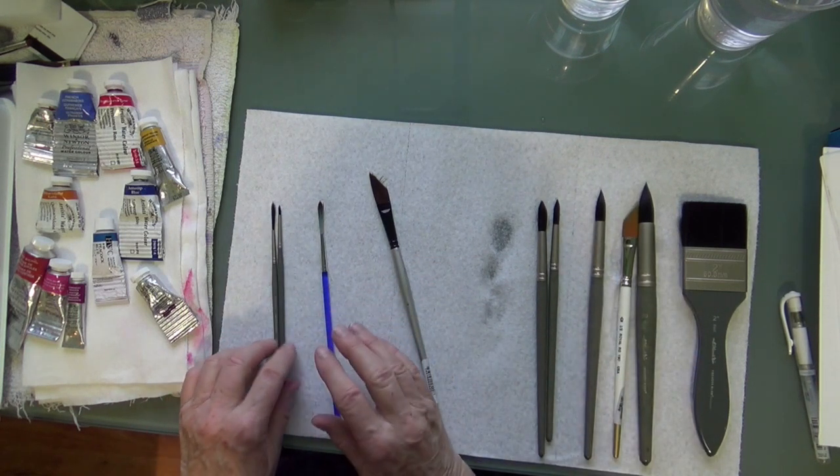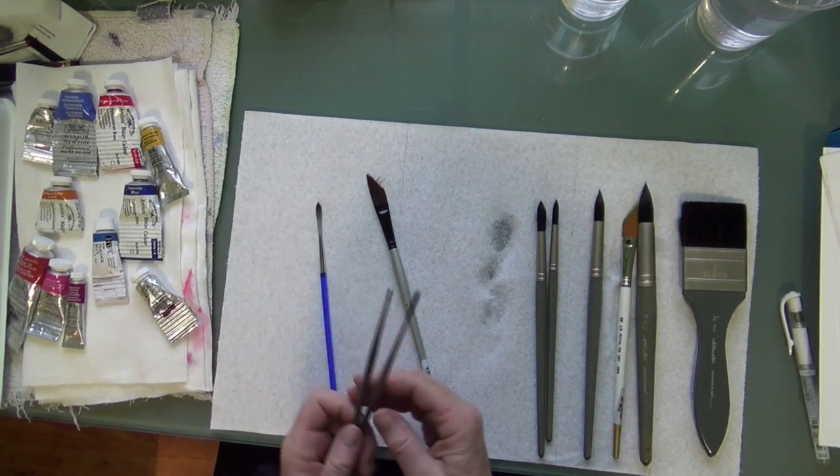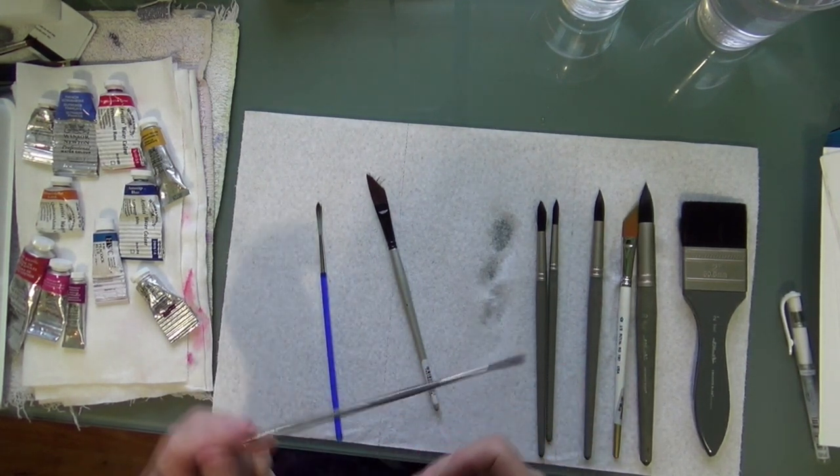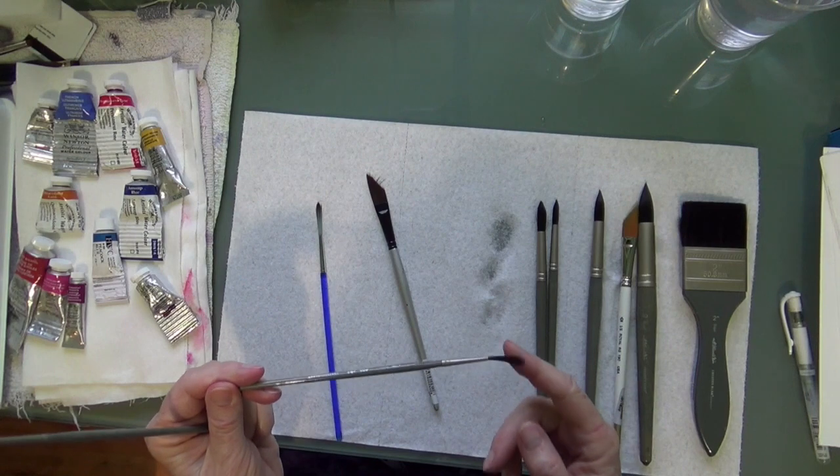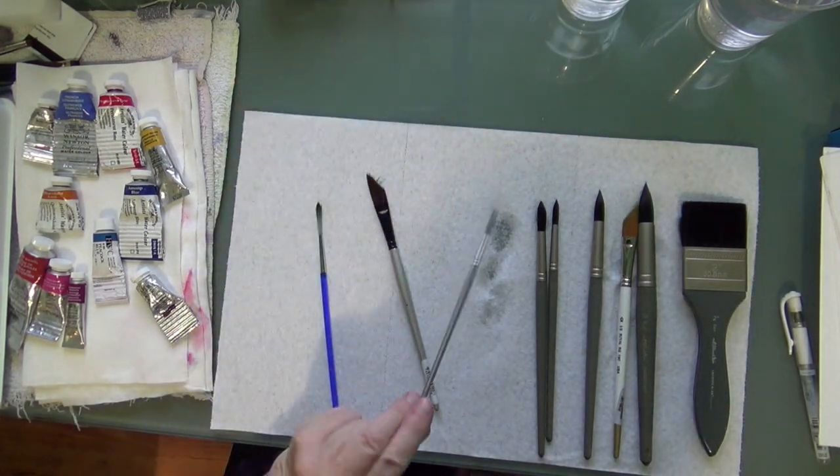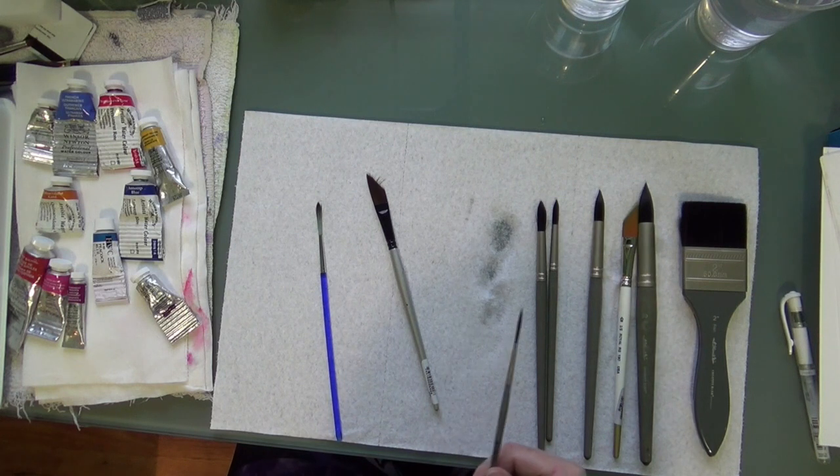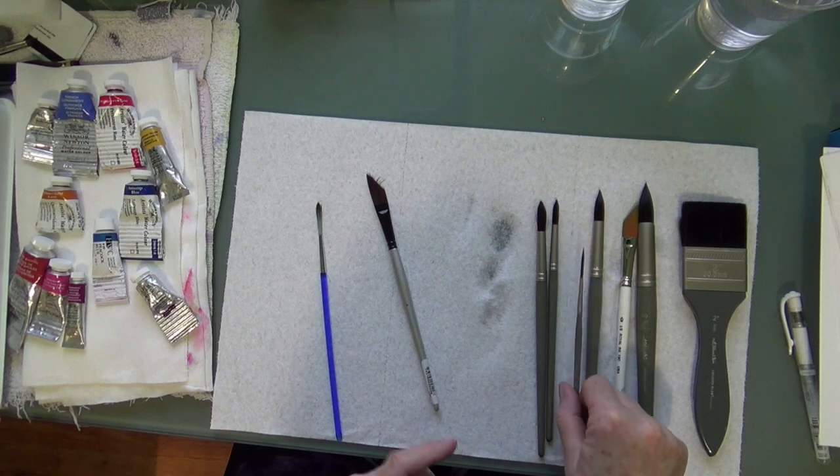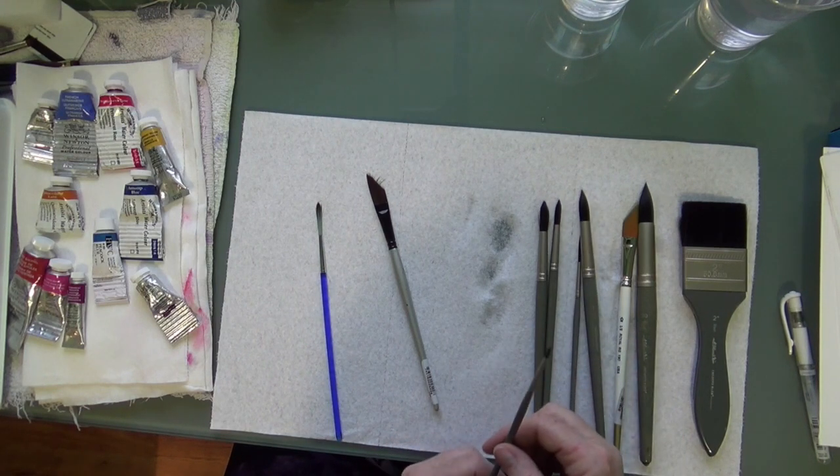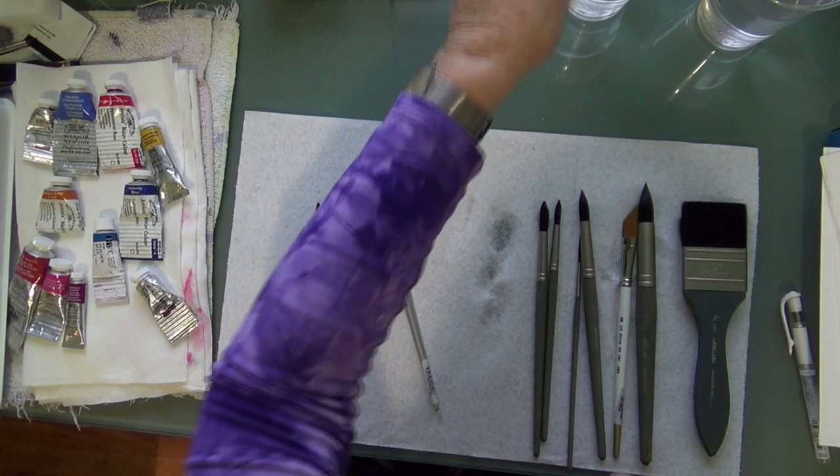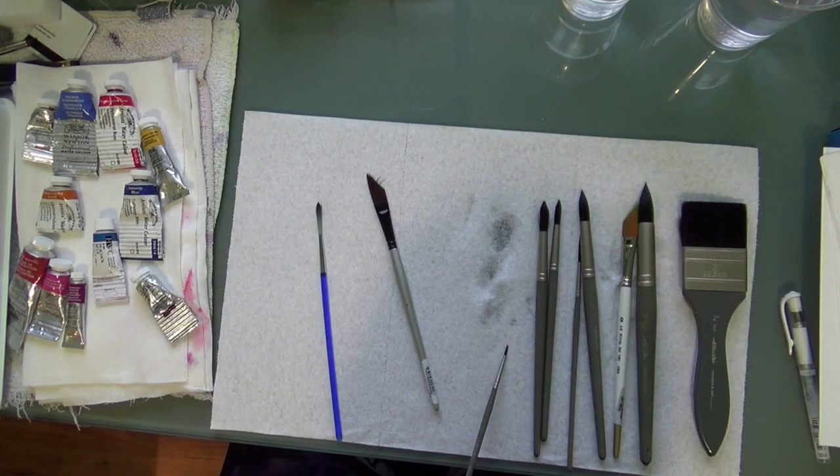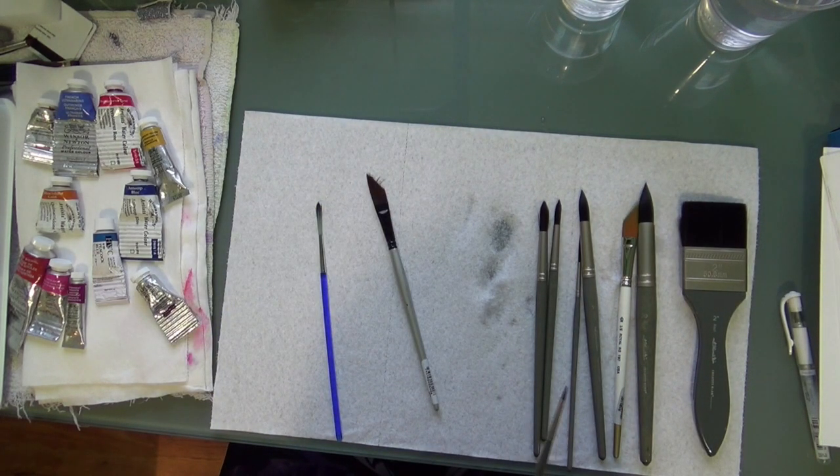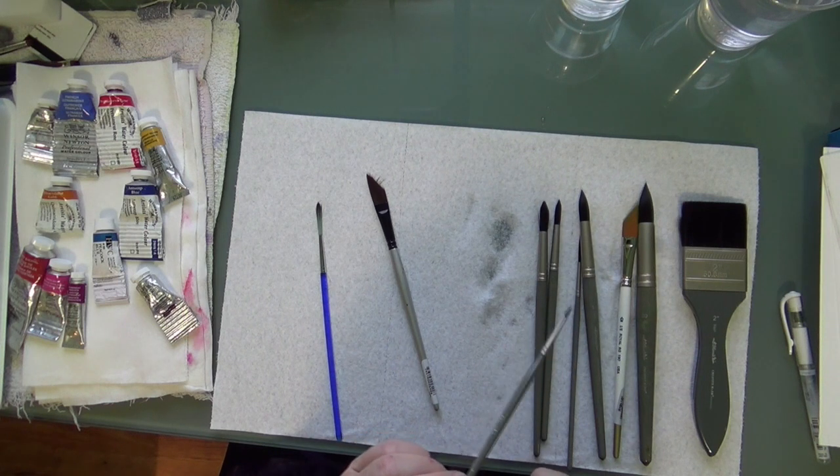And so then there's a couple more brushes that are really handy to have. One is a liner brush, that's like a skinny brush with long hairs, like this one. And there again, the same thing applies. Make sure it can come to a nice fine tip. It's called a liner brush or a script brush or a rigger brush, it has many names. This one is a number 3. You can get it a little bit skinnier if you want. And then this little one, it doesn't have nearly as long hairs and that's called a detail brush. And that's for little nitty gritty things.